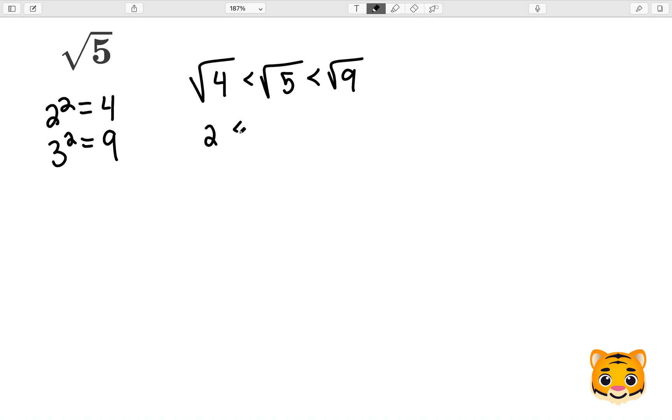Because 2 squared gives us 4, we can rewrite the square root of 4 as 2, and we can also rewrite the square root of 9 as 3, because 3 squared gives us 9.